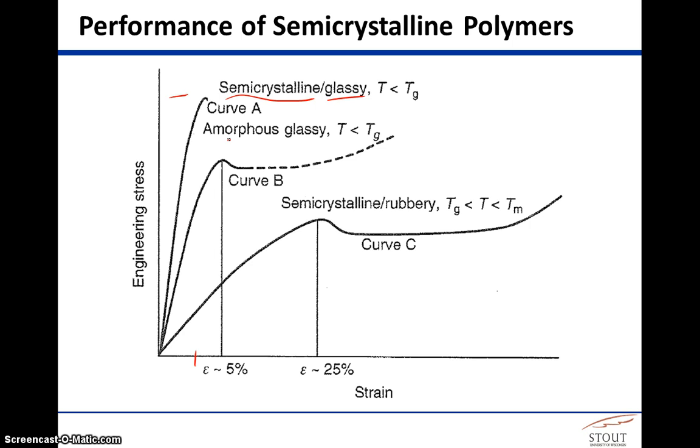If we had an amorphous glassy material, that's curve B, you see that its ultimate strength is not quite as good as with semi-crystalline. However, it tolerates a higher degree of deformation before failure. And you see this is the variable region where some samples could experience a much higher strain.